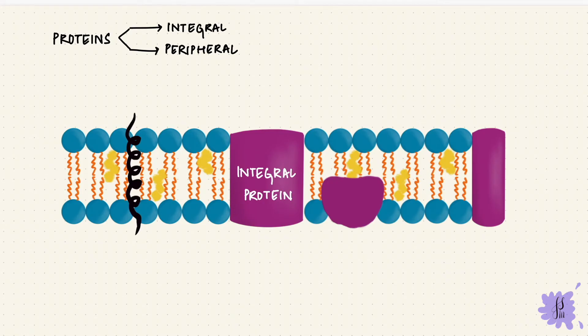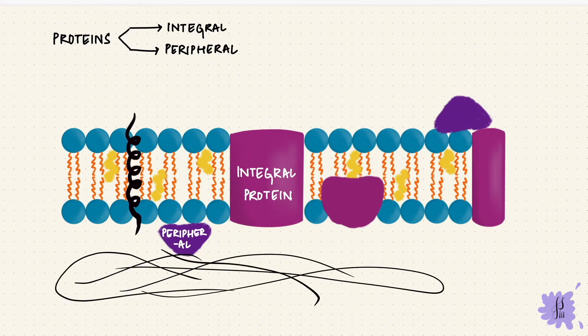The peripheral proteins, on the other hand, are not embedded. They are peripheral, so they're outside. They can be attached to the integral proteins or to the phospholipids. Peripheral proteins can act as enzymes, help in transport, and provide support by attaching to the cytoskeletal framework of the cell.